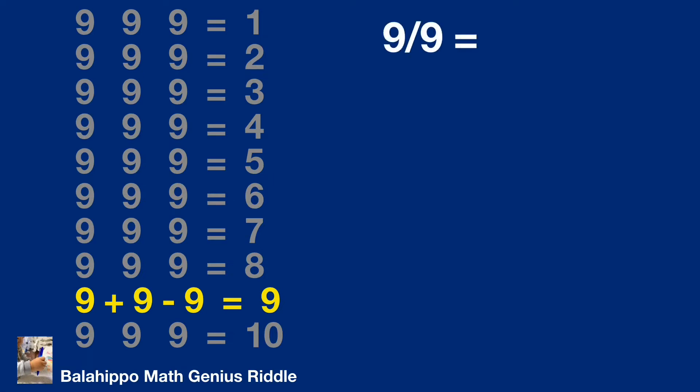Then 9 over 9 equals 1 as one object. So we have 9 minus 9 over 9 equals 8 and 9 plus 9 over 9 equals 10.